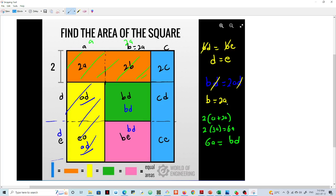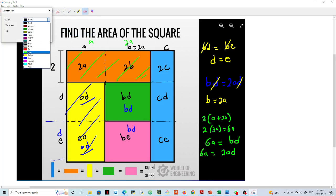But we know that b is equals to 2a, so it means 6a is equals to 2ad, which means that d is equals to, well let me show it. So what I can tell you here now is that